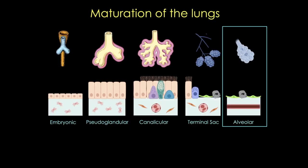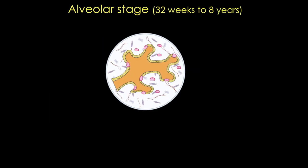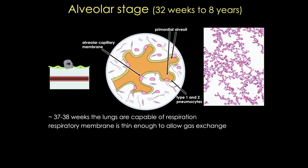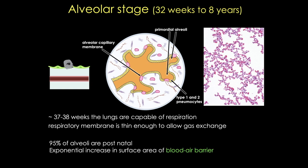Our final stage of lung development is the alveolar stage. Exactly when this stage begins depends on the definition of alveolus, but essentially at 32 weeks we have primordial alveoli present. As seen in these cartoons, the epithelial lining is very thin with a predominance of squamous type 1 pneumocytes. By 37 to 38 weeks, the alveocapillary membrane, or respiratory membrane, is developed enough to allow gas exchange. The lungs don't actually function until birth, but they are capable of respiration at this point. Most alveoli will mature postnatally — there are about 150 million primordial alveoli in a full-term neonate, and that number will expand to 300 million mature alveoli between 3 and 8 years of age.